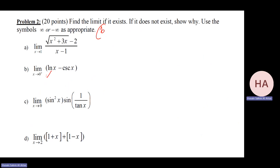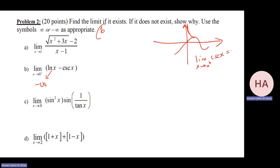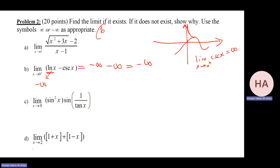Part b: we know this limit is minus infinity. For cosecant, looking at the graph of sine and cosecant: as x goes to zero from the right, cosecant of x goes to plus infinity. So the expression is minus infinity minus plus infinity, which equals minus infinity minus infinity, which is minus infinity.